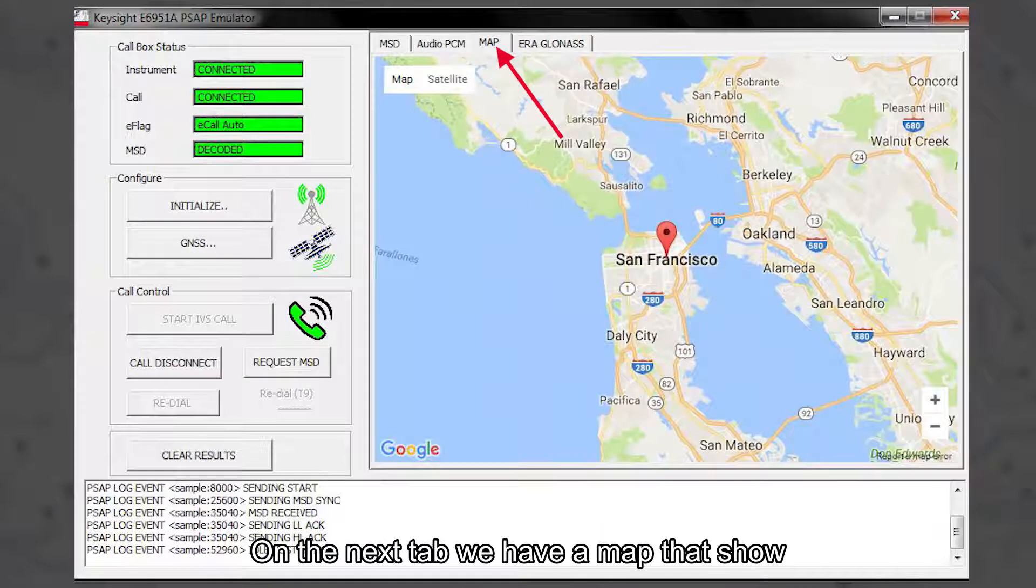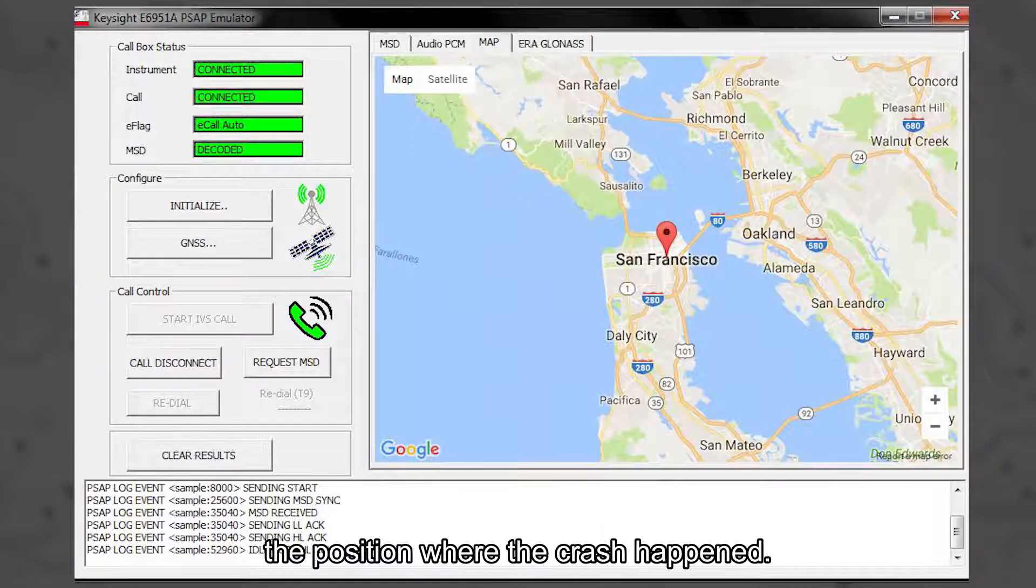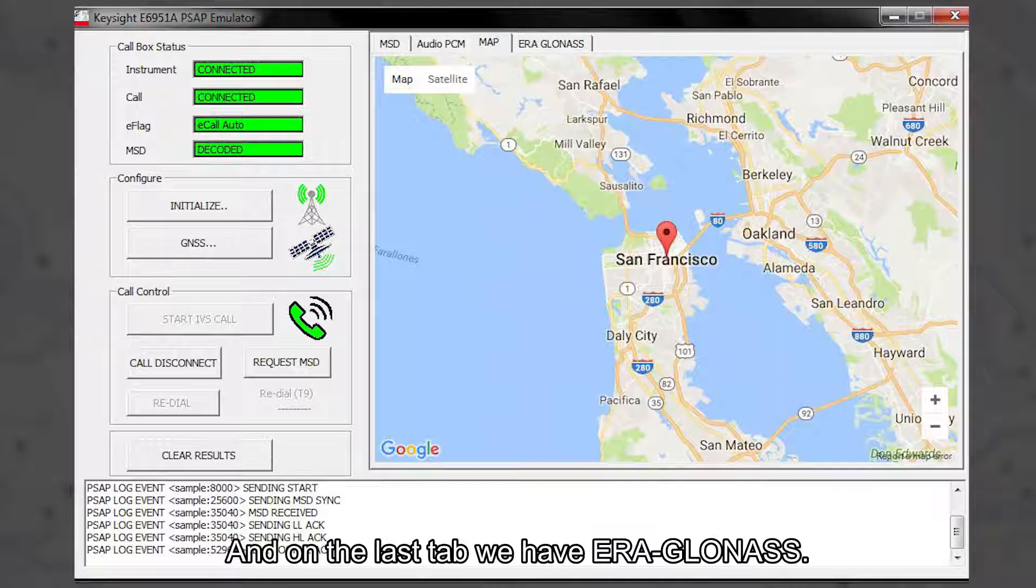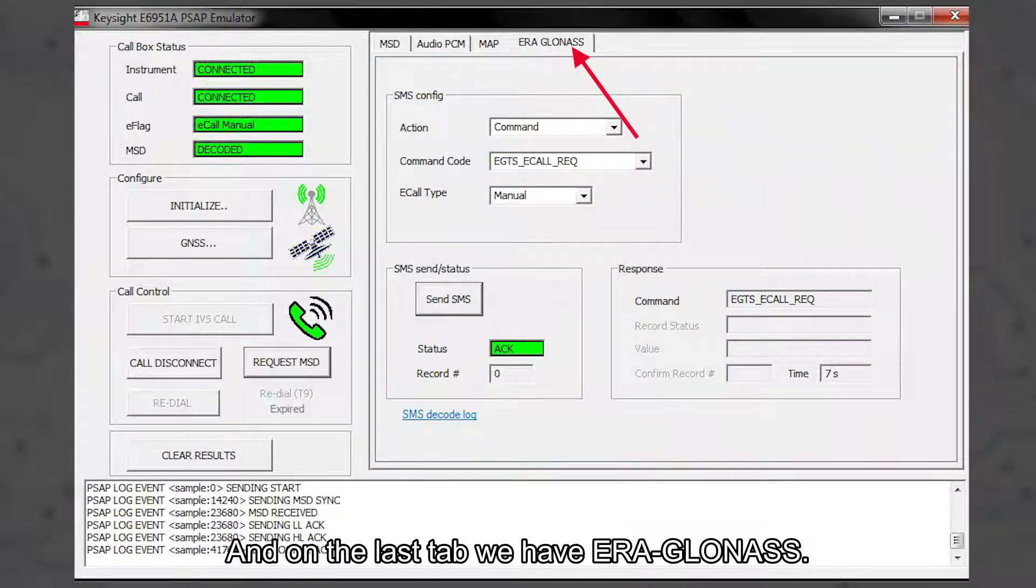On the next tab we have a map that showed the position where the crash happened, and on the last tab we have ERA GLONASS.